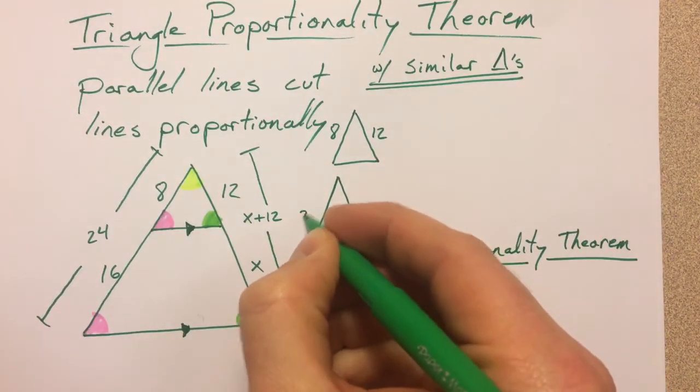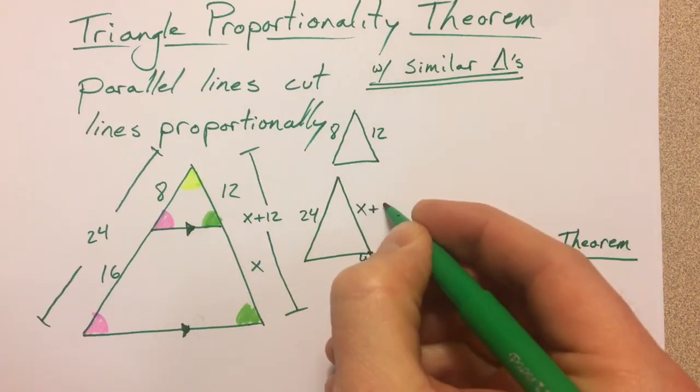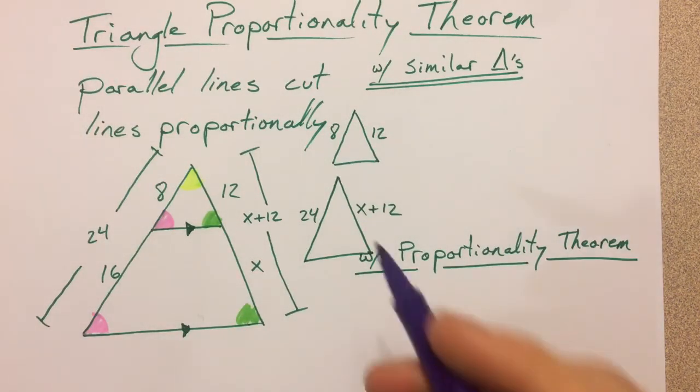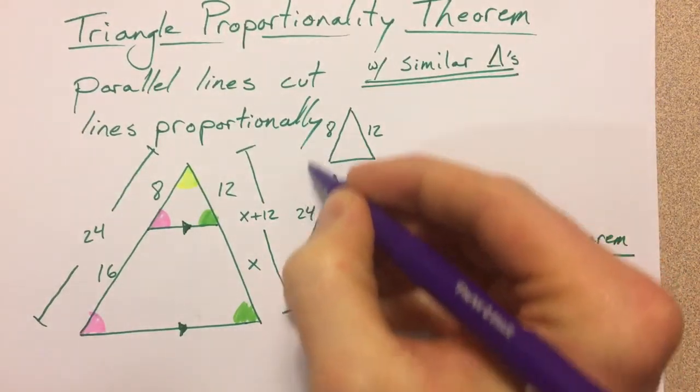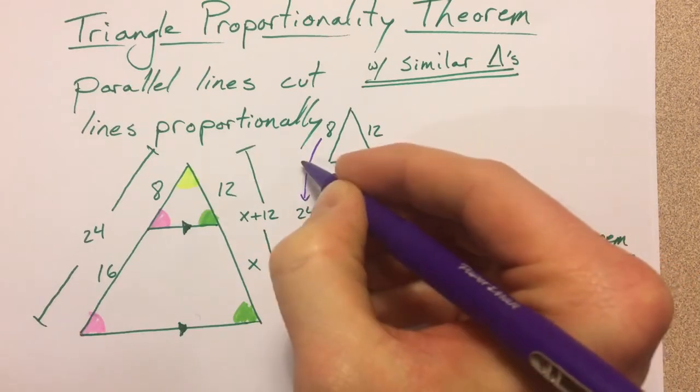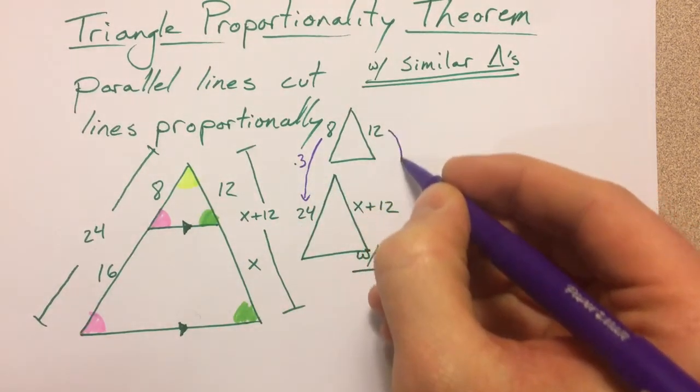Now we've done a lot of proportions. I want you to notice that the smaller triangle to the bigger triangle is just a scale factor of 3, so I can multiply by 3, and then 12 times 3 is going to get me 36.